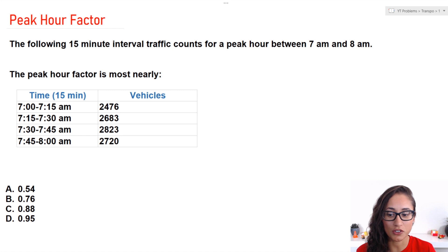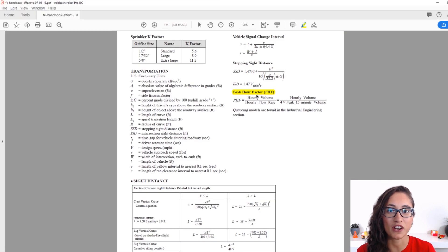Now, if we go to the reference manual and type in peak hour factor, it will take us to the transportation section on page 174. So here we have two equations, we're going to use the second equation since we were given the vehicles for the 15 minute interval. So let's write the equation down and start solving this problem.